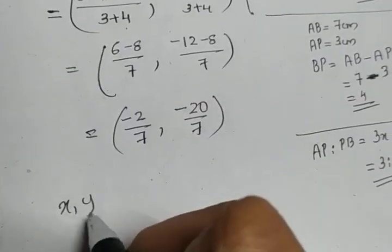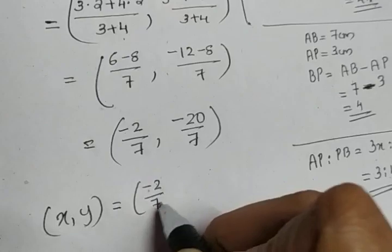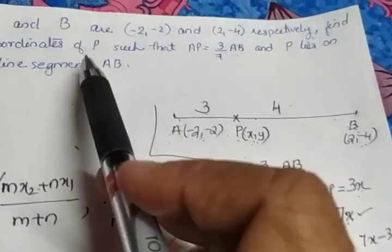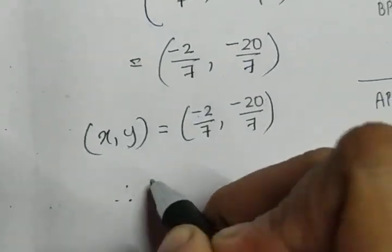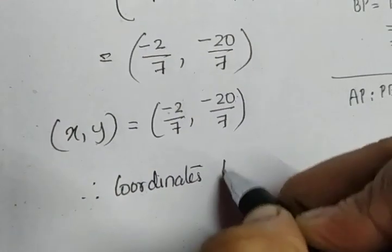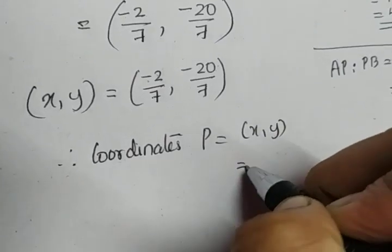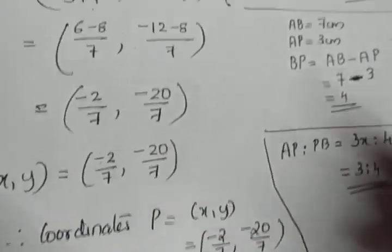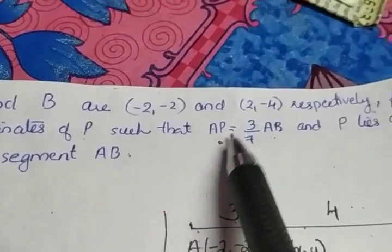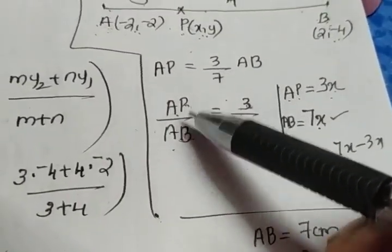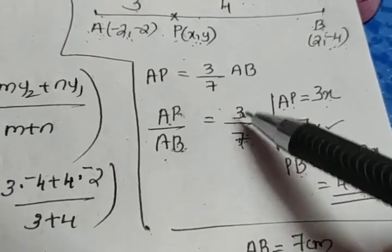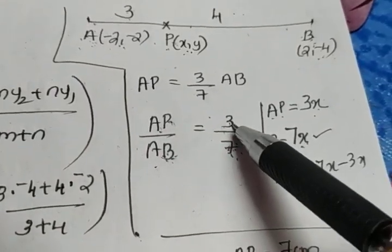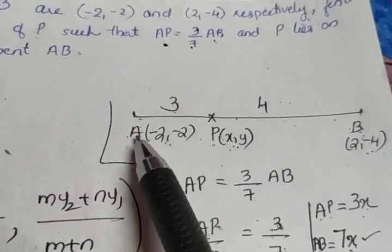So we get (X, Y) = (-2/7, -20/7). Since (X, Y) is the coordinate of point P, therefore the coordinates of P are (-2/7, -20/7). The only extra step in this question was that instead of the ratio, the relation AP = 3/7 · AB was given. From there we derived AP/AB = 3/7.